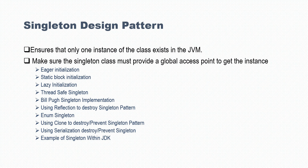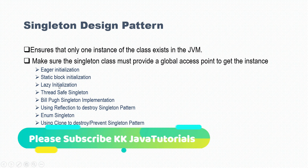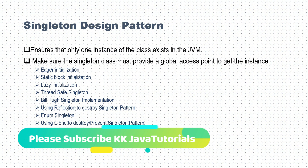In both cases — eager initialization as well as static block initialization — the singleton object gets created even before it is used by the client. That's why we have lazy initialization. With lazy initialization, the singleton object will not be created until the client actually uses it, and there we also have provision to handle exceptions, like in static block initialization.